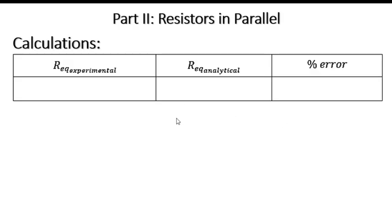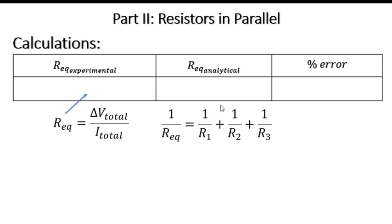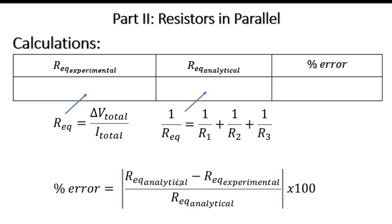For the equivalent resistance experimental value, you will calculate it using the formula: total voltage divided by total current. For the equivalent resistance analytical value in parallel connection, the formula is: 1 over R_eq equals 1 over R1 plus 1 over R2 plus 1 over R3. For the percentage error, that is the difference of the equivalent resistances divided by the equivalent resistance using the analytical value, times 100.